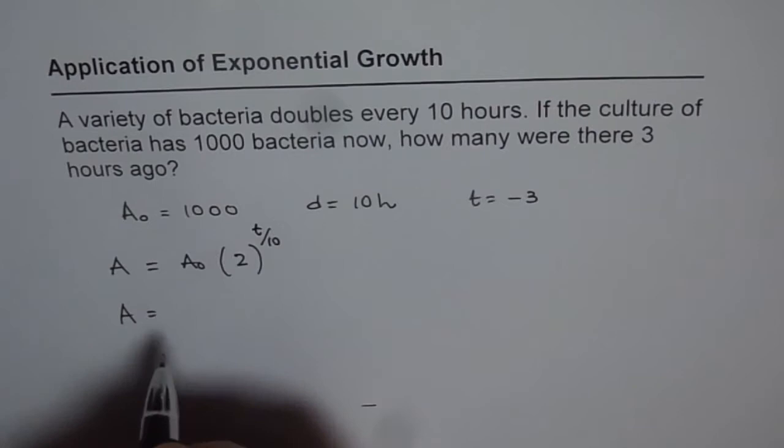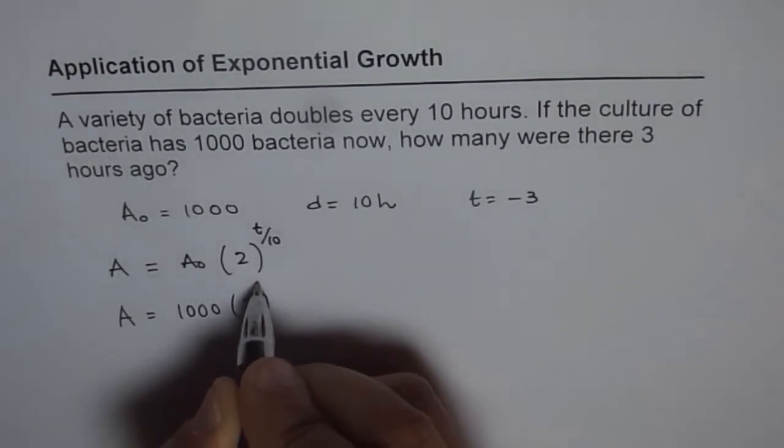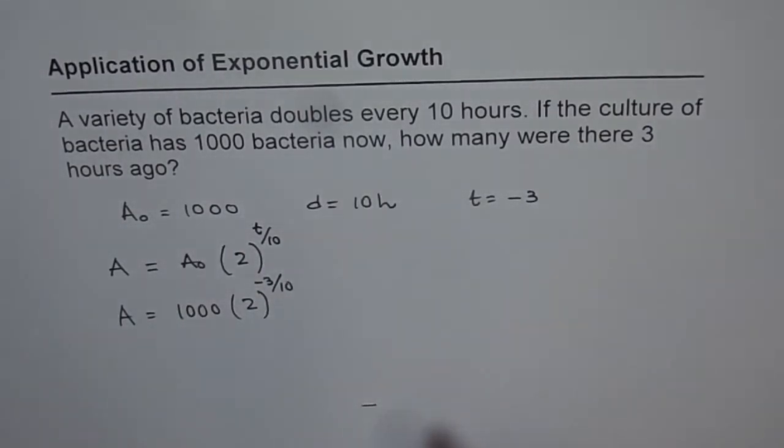A is equal to 1000 times 2 to the power of minus 3 over 10. That is what we need to find.